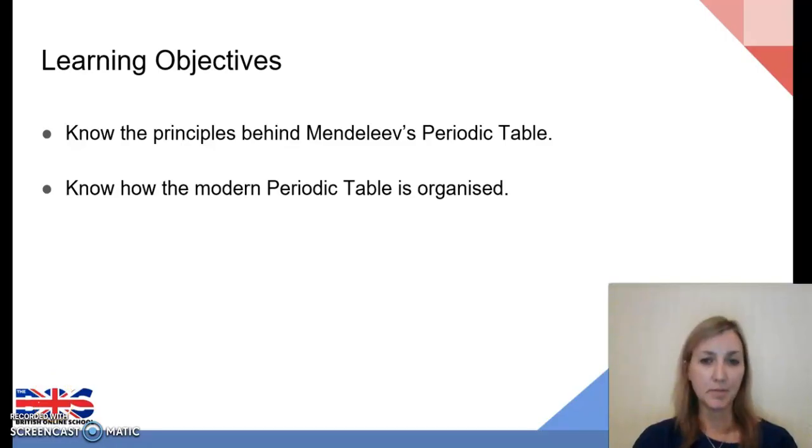So to summarize what we've learned today in Lesson 2 of Topic 4, The Periodic Table, we have looked at the principles behind Mendeleev's Periodic Table and understood how elements are organized in groups and periods. We've then looked specifically at names and some properties of different groups within the Periodic Table.